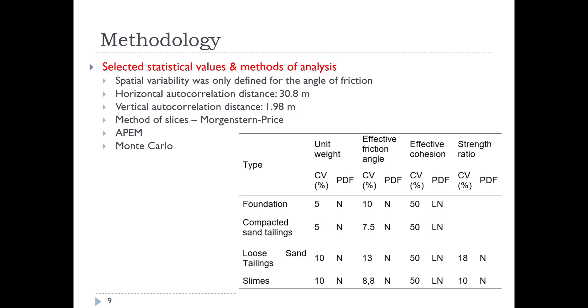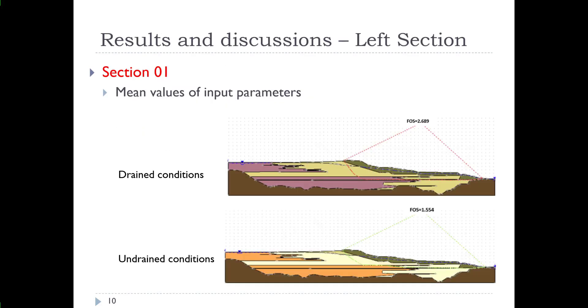There was a horizontal autocorrelation distance of 30.8 meters, a vertical autocorrelation distance of 1.98 meters, so spatial variation was accounted for in the analysis. The Morgenstern-Price method of slices was used for the analysis as well. The alternate point estimate method was utilized for the variational analysis as well as the Monte Carlo method in the analysis. So this is just defining the parameters that we used.